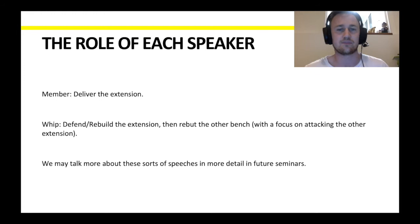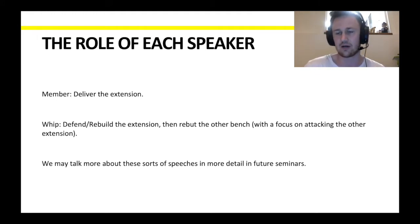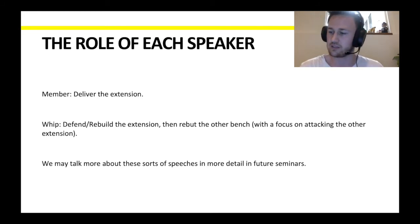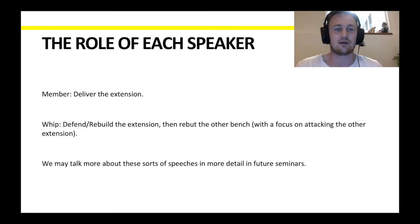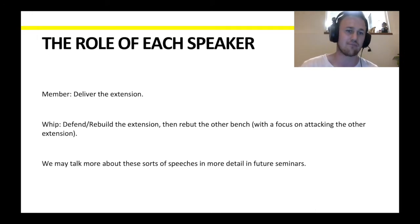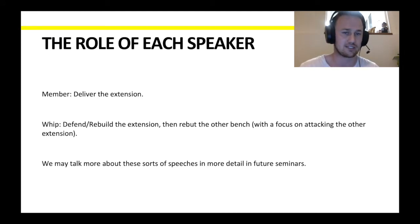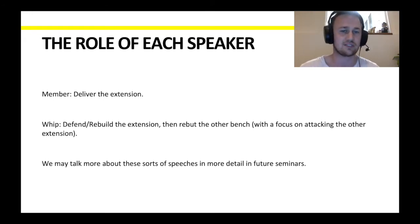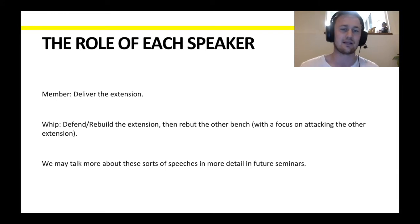So what is the role of each of the speakers in the back half? The member is the first speaker on either closing team, and their job is to simply deliver the extension. The whip, who's the second speaker, has two jobs. Their first and most important job is to defend and rebuild the extension. So often the other team will attack your extension and you have to spend some time responding to that rebuttal, keeping it alive.